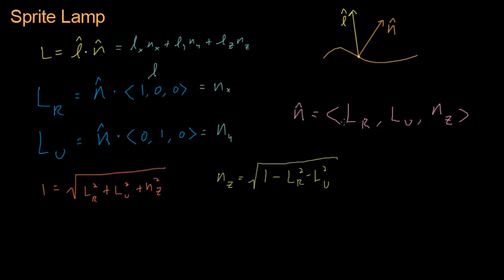So the Z component is 1 minus LR squared minus LU squared. Good. So, let's put it all together. The ending vector is going to be LR, LU, these are the X and Y components, and the Z component is going to be square root of 1 minus LR squared minus LU squared. Done.